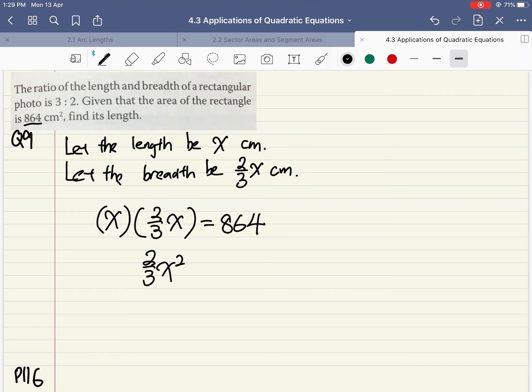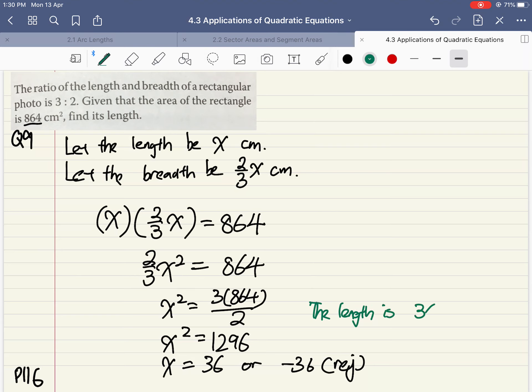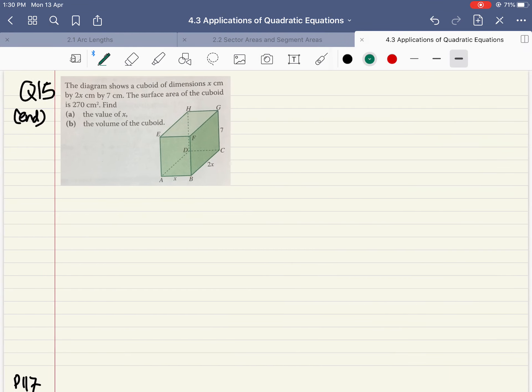What I'll get is 2/3 x squared equals 864. Multiply by 3, divide by 2 on both sides, so I'll get x squared equals 3 times 864 over 2, x squared equals 1296. How do we get rid of square? That's right, we square root both sides of the equation. We can either get x equals 36 or negative 36, which we will reject because lengths cannot be negative. Hence, the length is 36 cm.